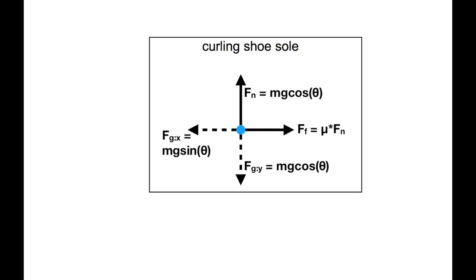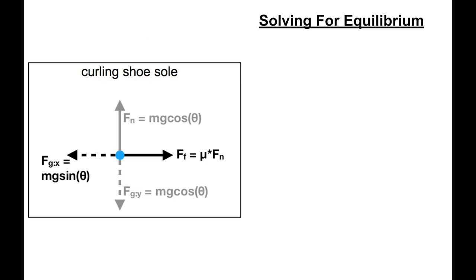The normal force and the force of gravity in the y direction cancel each other out, as both are equal to mg cosine theta but in opposite directions. In solving for equilibrium, then, we can set the net force equal to the force of friction minus the force of gravity in the x direction. Replaced with the equations, we find that the net force equals mu times Fn minus mg sine theta. But, we also know that force equals mass times acceleration. Therefore, mass times acceleration equals mu times Fn minus mg sine theta. Finally, we put mg cosine theta in for the normal force, and we have the unsimplified equation with the coefficient of friction mu.